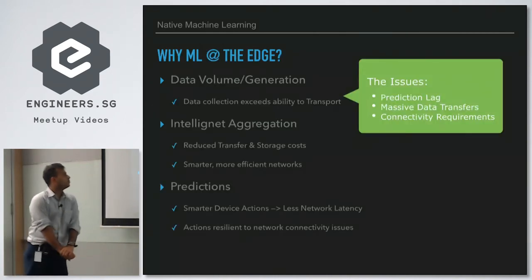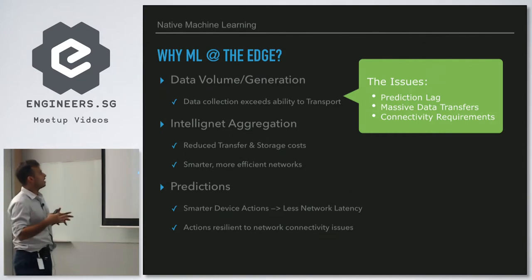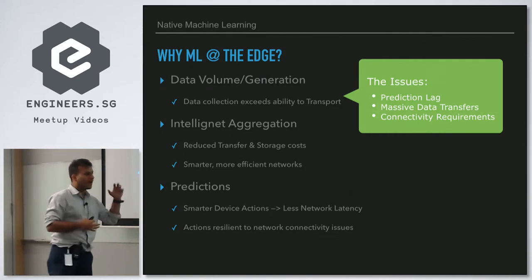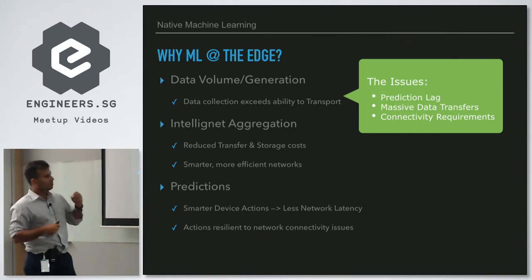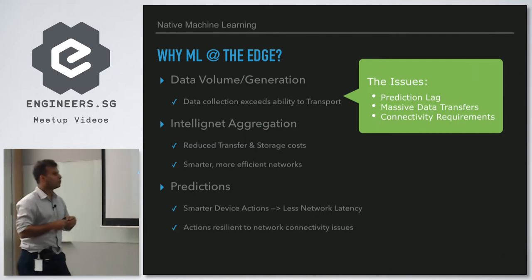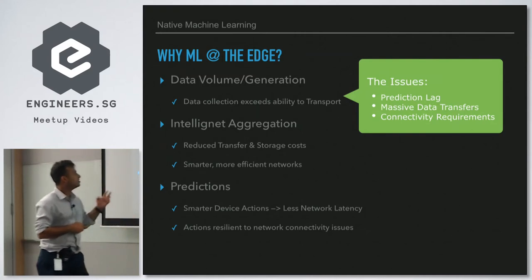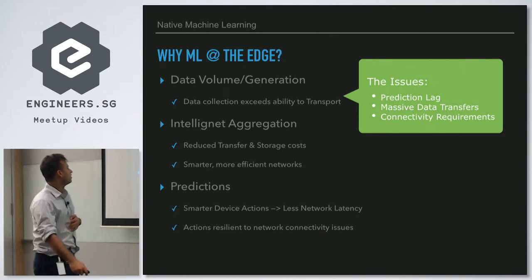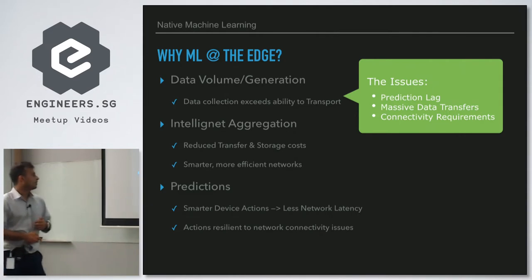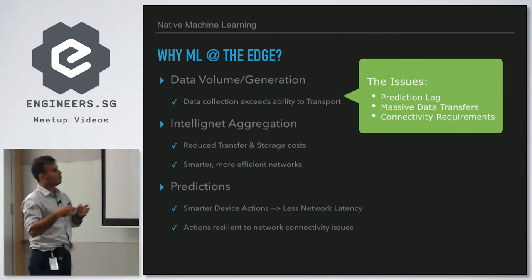Why run ML at the edge? In IoT scenarios, massive amounts of data are generated and the ability to transport all of it is limited. Keeping sending all messages to the cloud would be huge in volume. Using machine learning at the edge, you can train a model to decide what data needs to be sent to the next system. It enables intelligent aggregation, reduces transfer and storage costs, enables smarter device actions, reduces network latency, and makes the system resilient to connectivity issues.